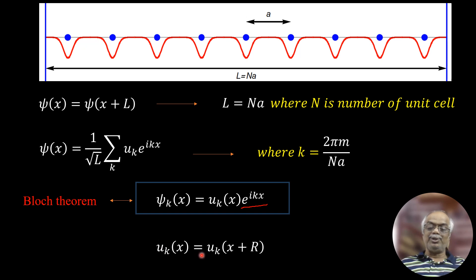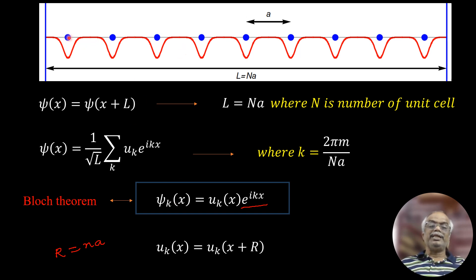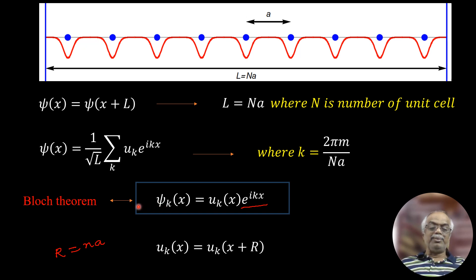There is periodicity in the wave function. The wave function has periodicity, and therefore wave function squared gives probability. Bloch's theorem states that the wave function in a periodic potential has two parts: one is the plane wave multiplied by a periodic function u_K of X.